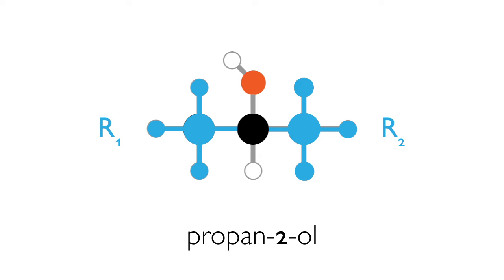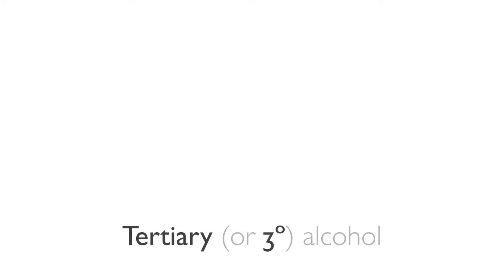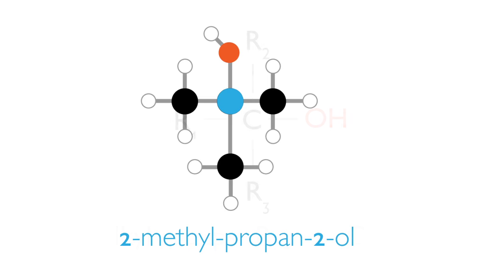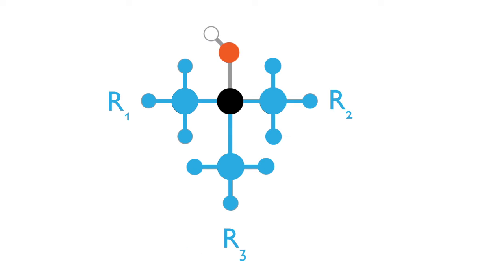In tertiary alcohols, there are three carbon chains attached to the carbon on which the OH group is attached. As you can see, the carbon attached to the OH group is attached to three alcohol groups, making it a tertiary alcohol.